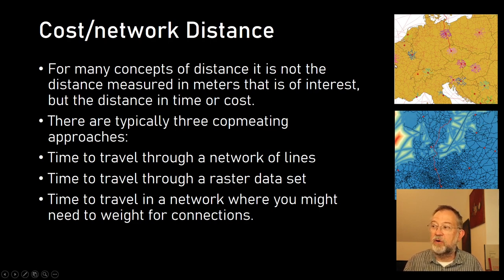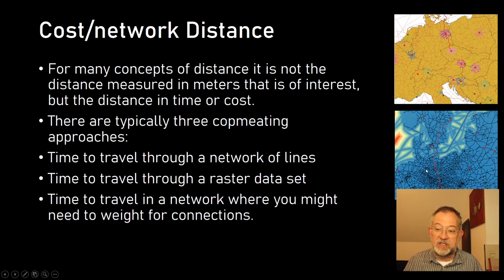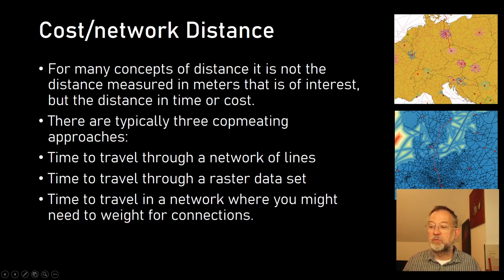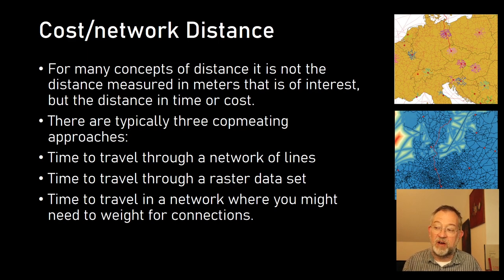The final group of operations covers distance in a network — cost distance. This includes the travel network of railroads, or a cost distance where I'm finding the shortest route by car, train, or walking from Stockholm to Prague — different ways of calculating travel through a network.